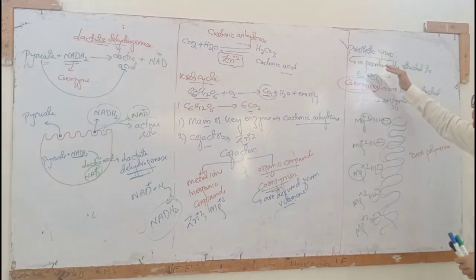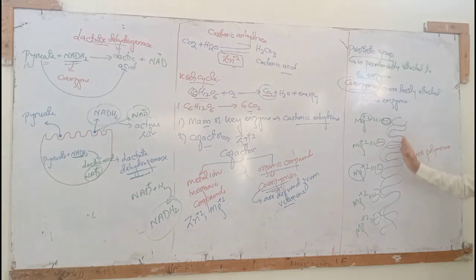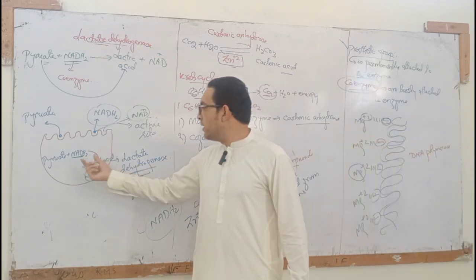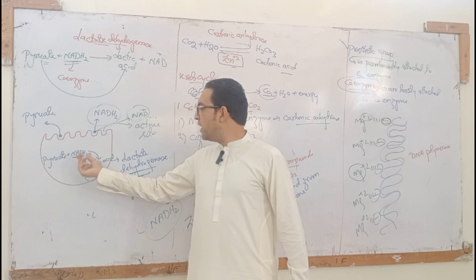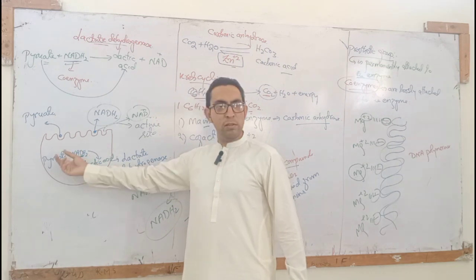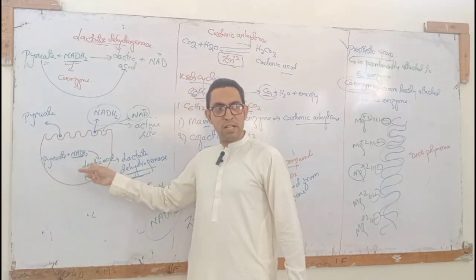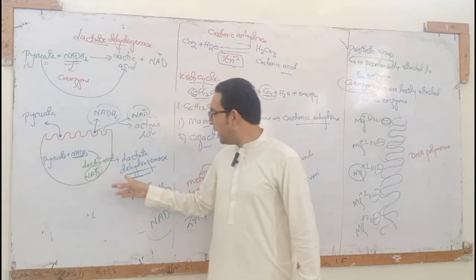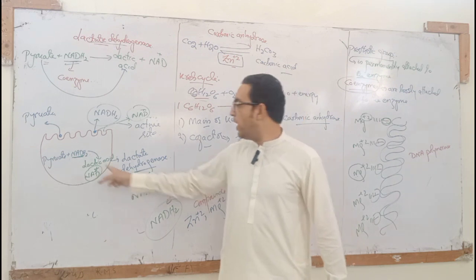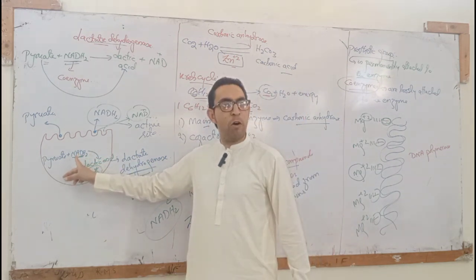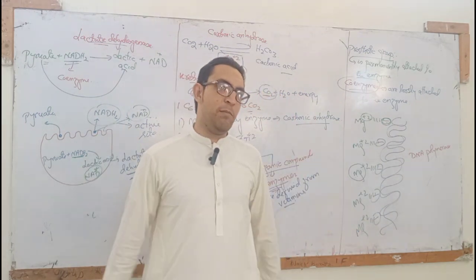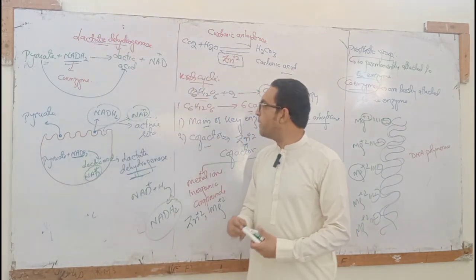A prosthetic group is permanently attached to the enzyme to stabilize it, for example by balancing negative charges. A coenzyme is loosely attached and detaches after completing its work, such as NADH₂ transferring hydrogen. Thank you, we will continue with the next topic in the next session.